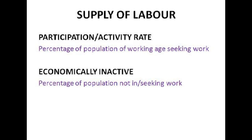Let's look at the supply of labour now — we're about halfway through the video! The participation or activity rate is basically the percentage of the population of working age in work or actively seeking work. It's about 75% in the UK, which is pretty good. Some people obviously aren't going to be seeking work — these are the economically inactive. They might want to be housewives or househusbands, or there might be other reasons why they don't want to seek work.